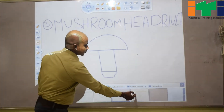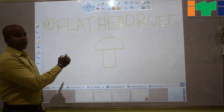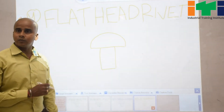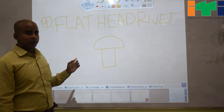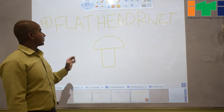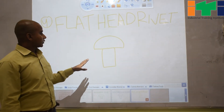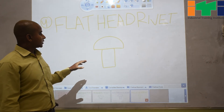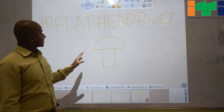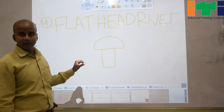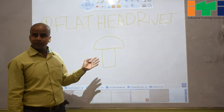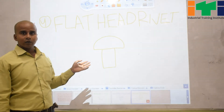Then we go to the fourth one, which is flat head rivet. Flat head rivet is most commonly used in sheet metal work or fabrication work, and it is used for thin metal sheets. Very thin metal sheets can be joined through flat head rivet, and the countersunk cones can be finished very easily.